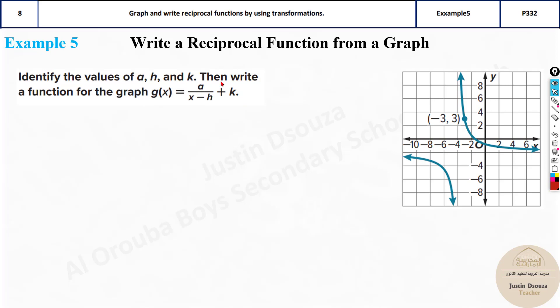Here we have the equation of the reciprocal function. We need to fill it up. See, a is unknown, h is unknown, k is unknown. Only this x will remain as it is, and this is y or g of x. We have the graph. We need to find the values for a, h, and k. How do we do it?